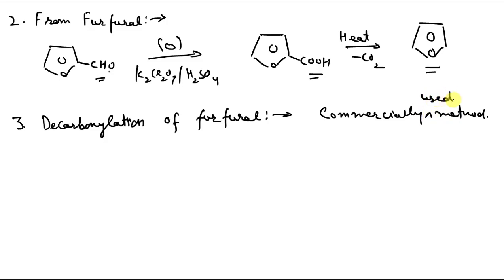Commercially used method means this method is used for large scale commercial production of furan. Simply what we have is this furfural. Then if we heat it in steam in the presence of silver oxide as a catalyst, Ag2O silver oxide. Silver oxide is used as a catalyst. So carbon monoxide, this group gets removed. So what we get is we are left with furan.